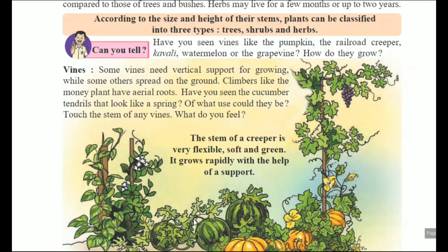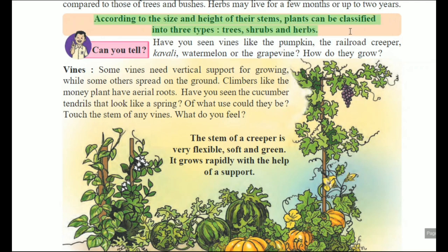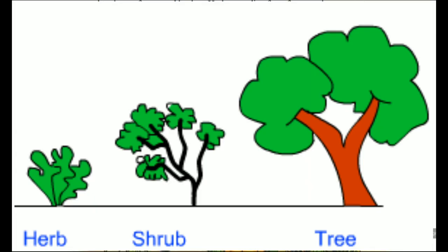Good morning students. In our last lecture we discussed the classification of plants according to the size and height of their stems. Plants can be classified into three types: trees, shrubs, and herbs. We already discussed the characteristics and examples of trees, shrubs, and herbs.